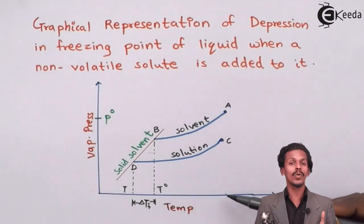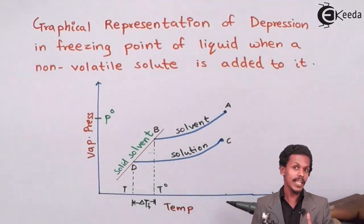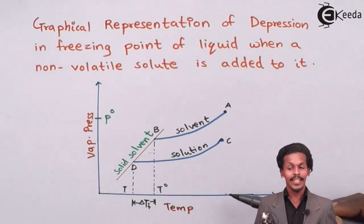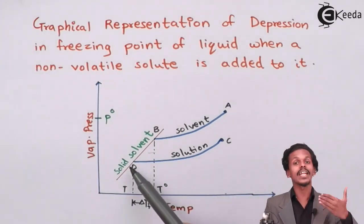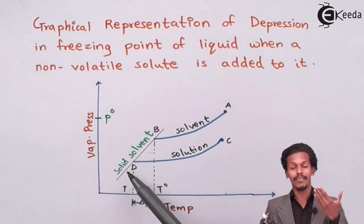And the thing that we have to do is now we have to decrease the temperature so that this curve or this point should reach the point D where it will get freeze or where it will get converted into solid.